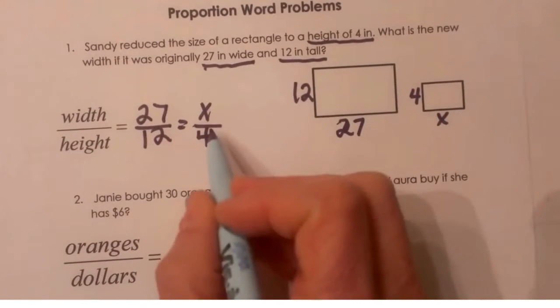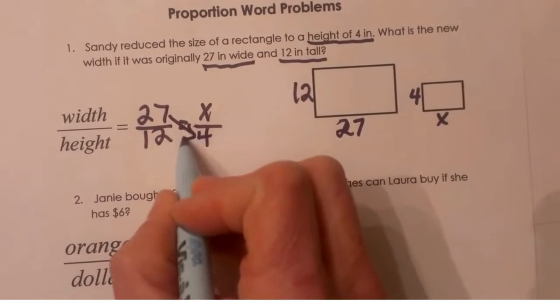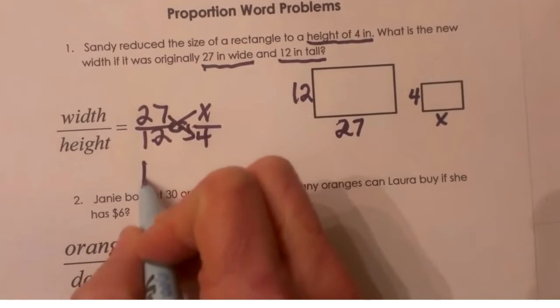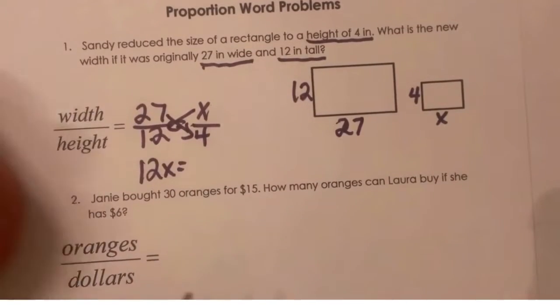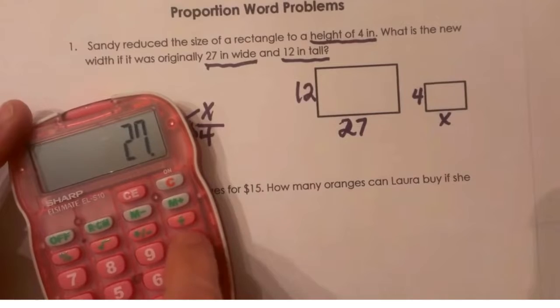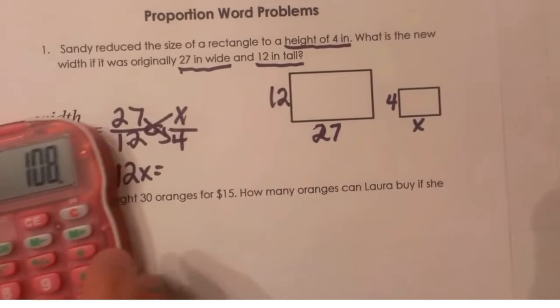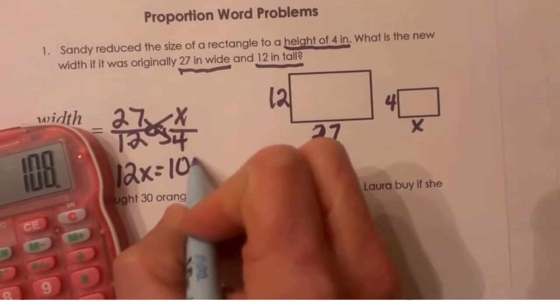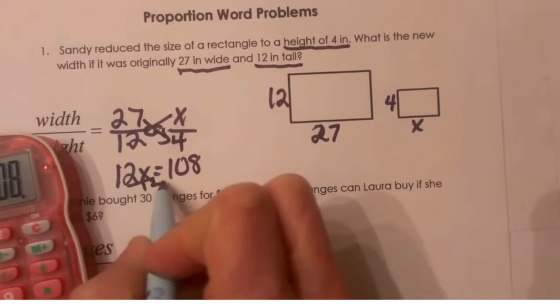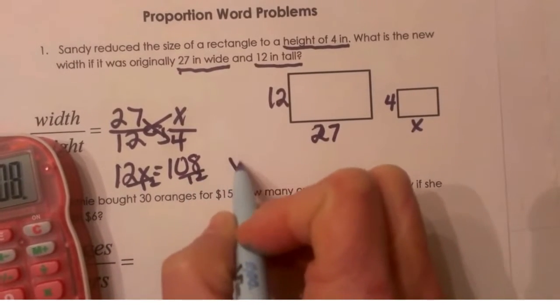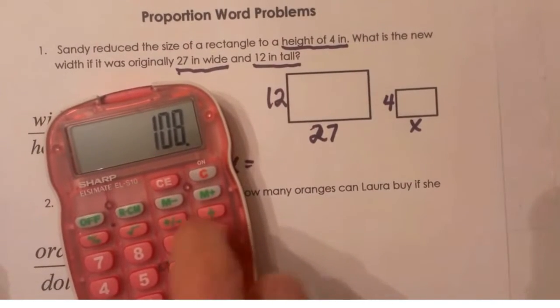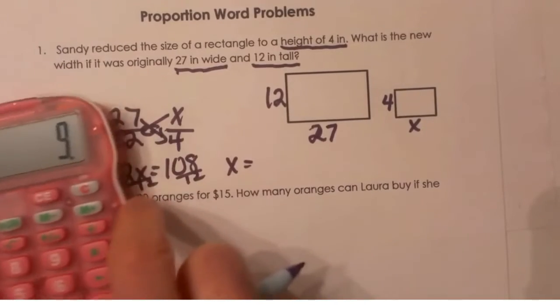Now from here to solve a proportion I just do cross products. I cross multiply 12 times X is 12X and 27 times 4. Let's multiply that, 27 times 4 is 108. Then to solve that you divide both sides by 12.